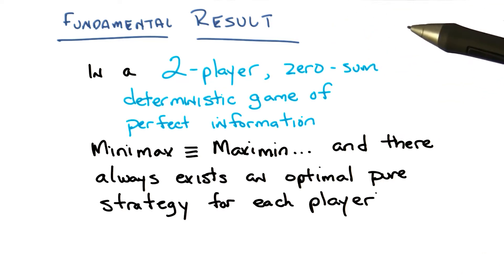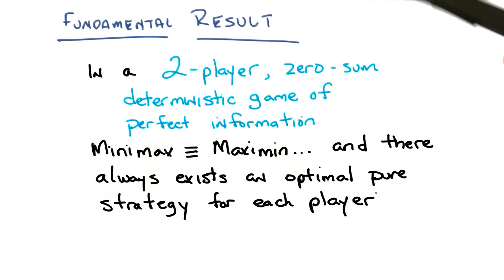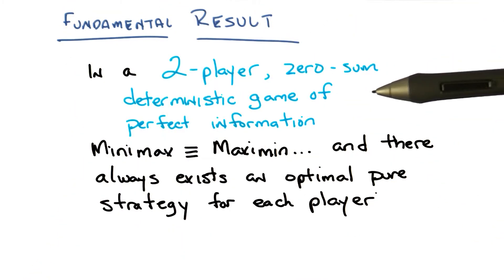In a two-player, zero-sum, deterministic game of perfect information, minimax equals maximin.